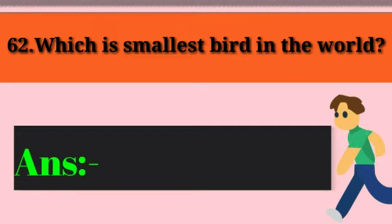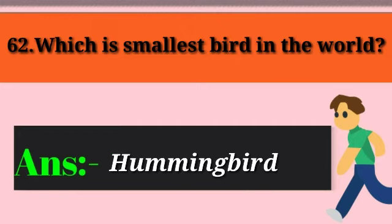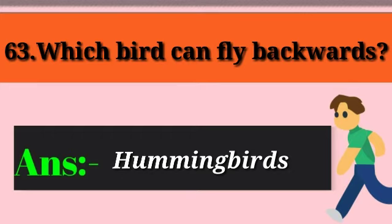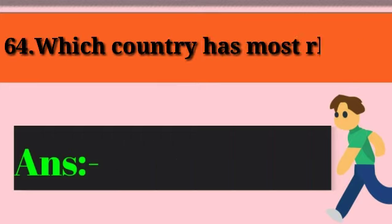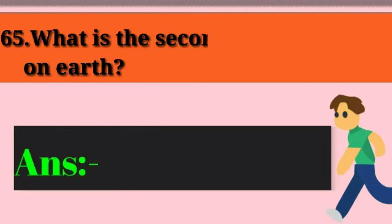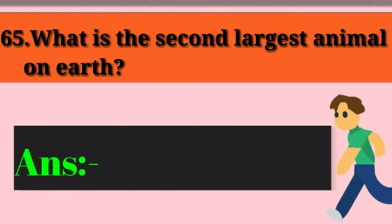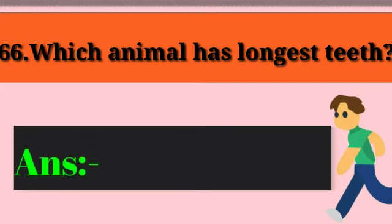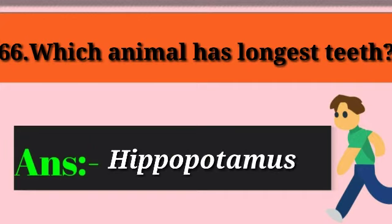Question 63: Which bird can fly backwards? Answer: Hummingbird. Question 64: Which country has the most rhinoceros? Answer: South Africa. Question 65: What is the second largest animal on earth? Answer: Elephant. Question 66: Which animal has the longest teeth? Answer: Hippopotamus.